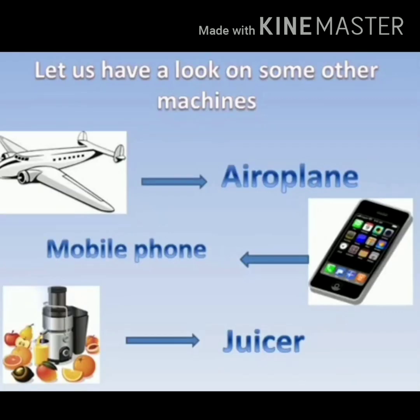Now let us have a look on some other machines. First, aeroplane. Second, mobile phone. And third, juicer. Aeroplane, mobile phone, juicer — yeh bhi kya hai? Machine hai.